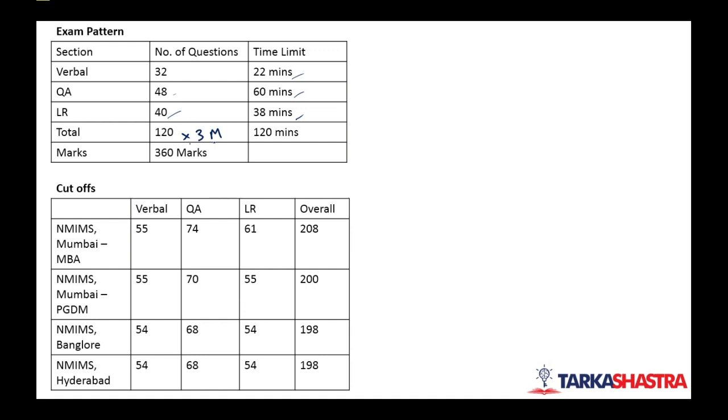Cutoffs for NMIMS Mumbai which provides the MBA program - the cutoff has been 208-209 since last 10 years. NMIMS PGDM the cutoff reduces a bit. NMIMS Bangalore and Hyderabad again the cutoff reduces much more. There is sectional cutoff. So you need to score good in all the sections and overall as well. The most difficult section amongst these is verbal one.